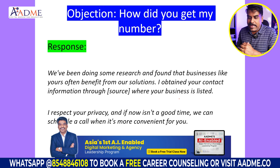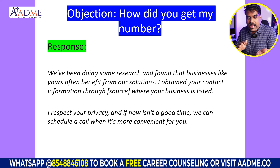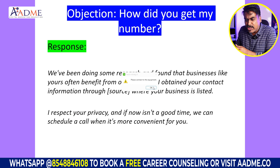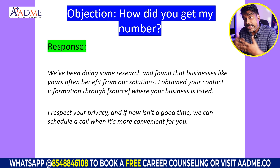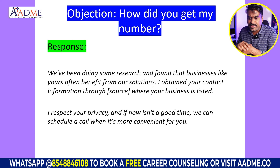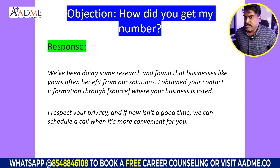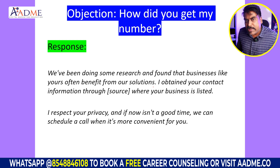For 'How did you get my number?' respond: 'We've been doing some research and found that businesses like yours often benefit from our solutions.' Add relevance: 'Our team has been researching and figured out that your education organization, gym, catering business, or interior design business can get a lot of benefit from our solutions.' You can also say: 'I obtained your contact information through a source like JustDial or IndiaMart where your business is listed. We respect your privacy. If now isn't a good time, we can schedule a call at your convenience. Is there a chance we can get back in the coming week for a quick 10-minute call? It's going to be an eye-opener for you.'